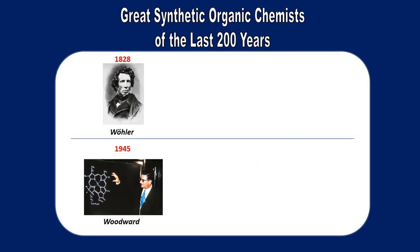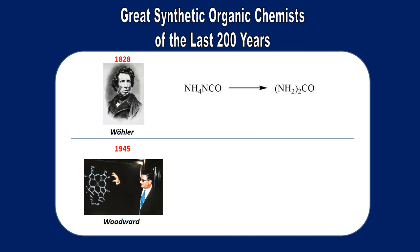Let's begin our discussion by taking a look at a few of the great synthetic organic chemists of the last 200 years, including everyone's favorite, the father of modern organic chemistry, Friedrich Wöhler, who kicked everything off in 1828 when he accidentally synthesized the organic compound urea from the inorganic material ammonium cyanate. A century later, in 1945, Robert Burns Woodward and his contemporaries were able to create penicillin and many other antibiotics derived from it in the organic chemistry laboratory.